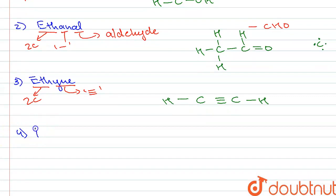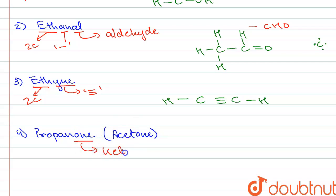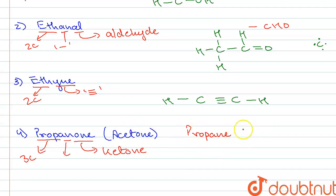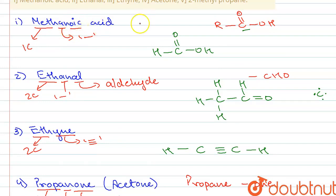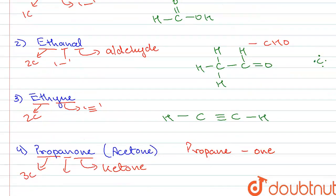Next we have acetone, which is the common name for propanone — you can write acetone in brackets. The suffix 'one' means it is a ketone, and 'prop' means there are three carbon atoms. When we write propane and add the suffix 'one', since both 'e' and 'o' are vowels, we remove the 'e' from propane before attaching the suffix. Similarly, in methanoic acid, 'e' is removed from methane before adding 'oic acid'.